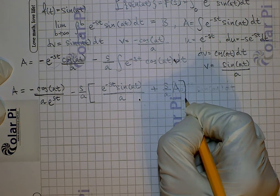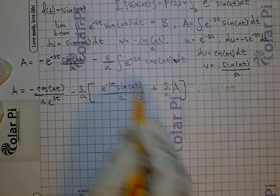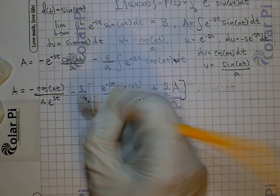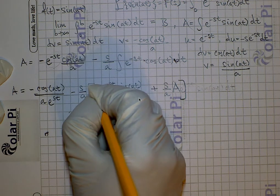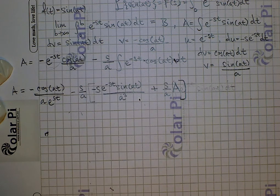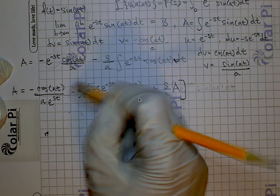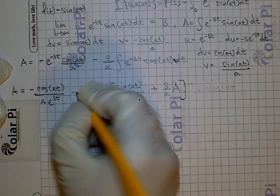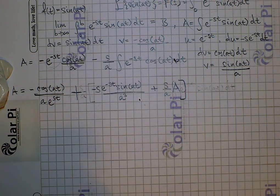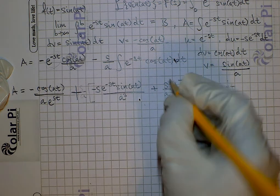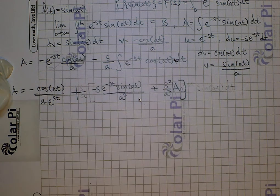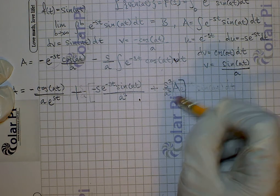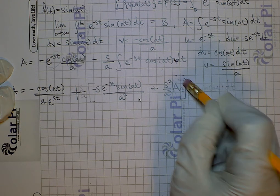Next I'm going to distribute this minus s over a to get rid of the hard brackets. What's going to happen is I'll have negative s squared over a squared, and distributing that minus s over a turns this plus sign into a minus sign, giving s squared over a squared times capital A with a minus sign.